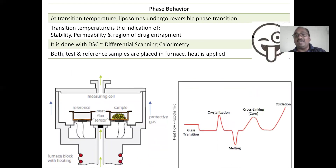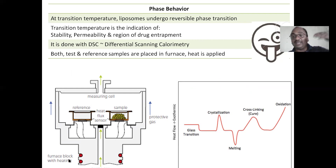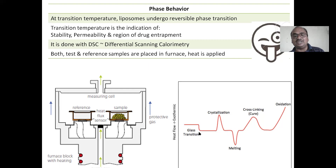Phase behavior — how it behaves — is determined using DSC (differential scanning calorimetry). A standard reference is placed in one cell and the sample in another, and electric voltage is applied. It starts melting. You observe glass transition temperature, crystallization, melting, cross-linking, and oxidation — all by using DSC.